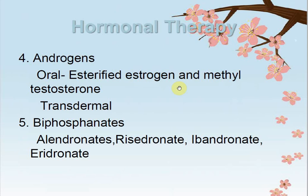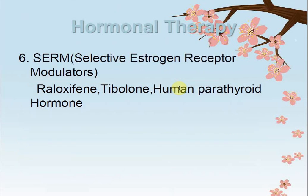Bisphosphonates — including etidronate, alendronate, and risedronate — are medications provided as a preventive measure for bone density. These medications help patients prevent bone loss. They are selective estrogen receptor modulators (SERMs) that affect the patient's hormonal level.